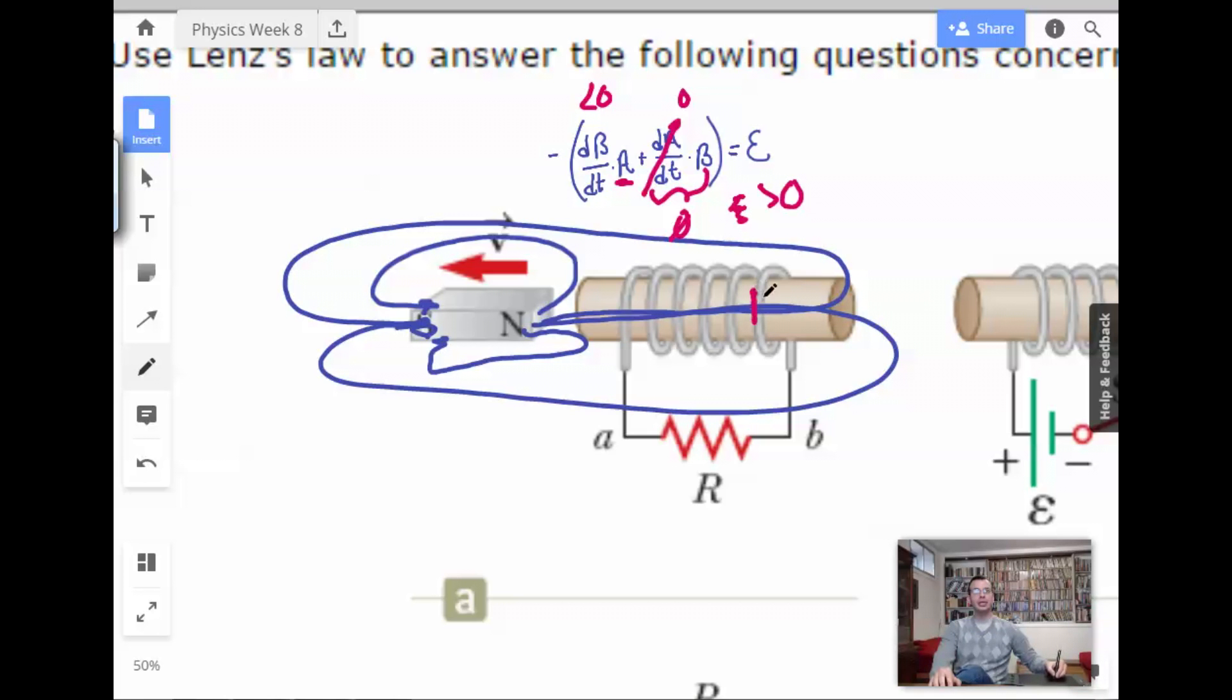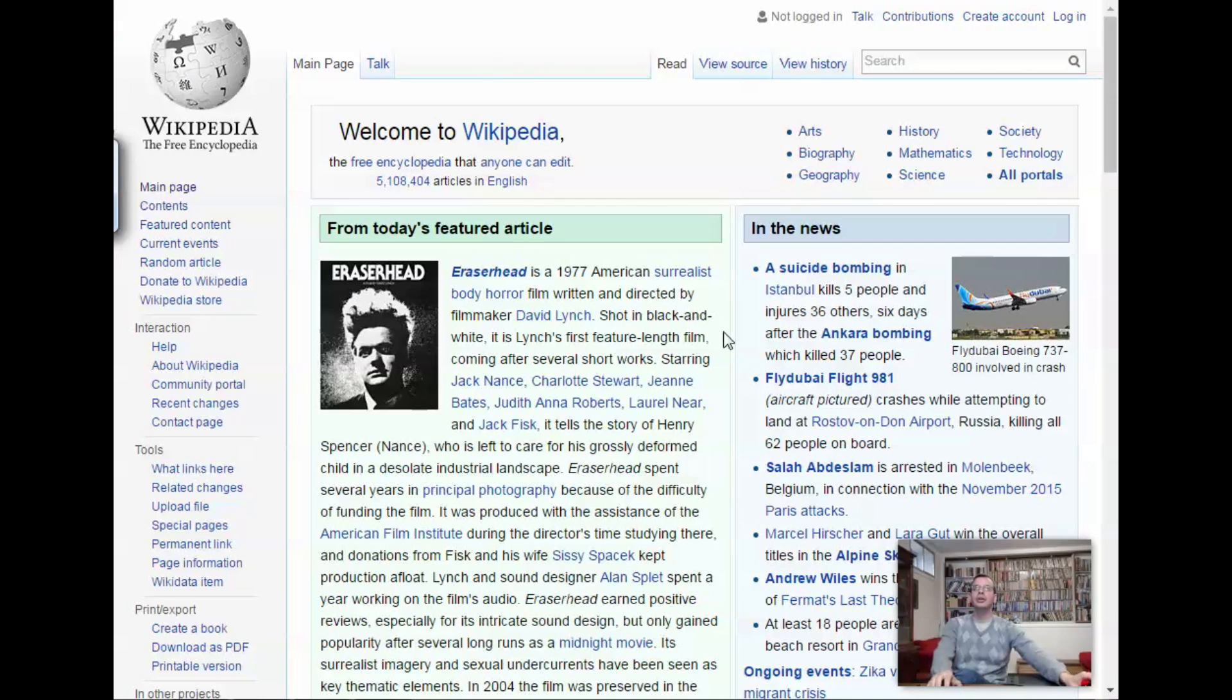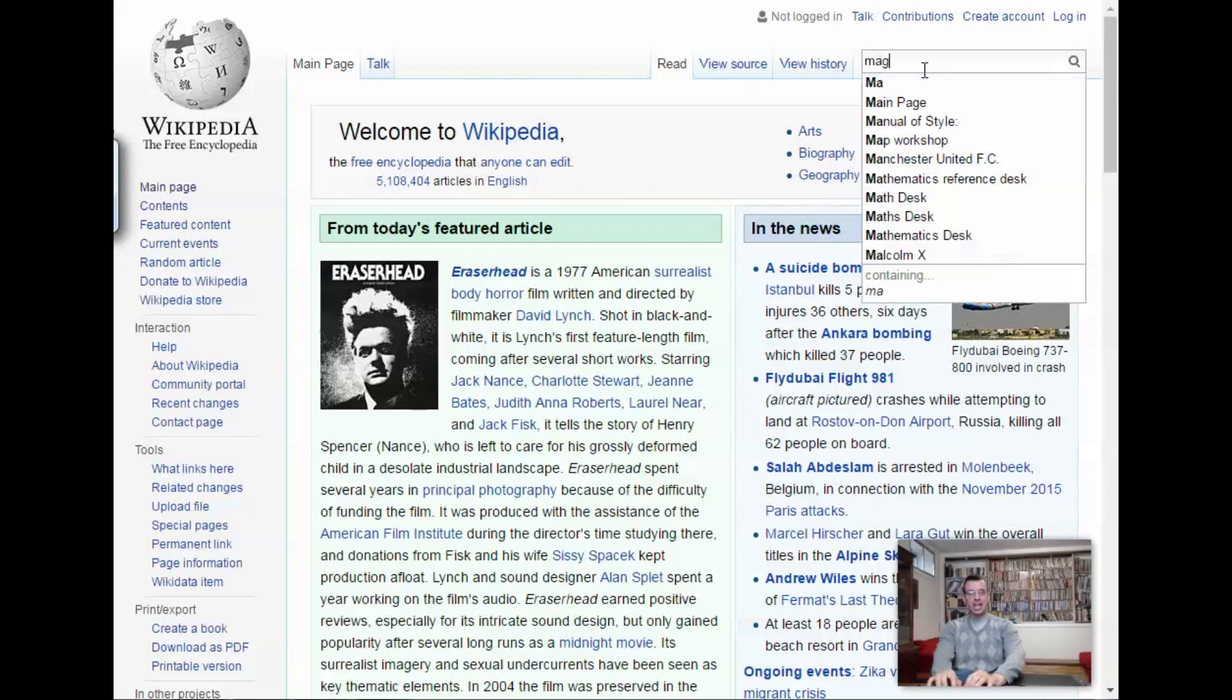All right. So what that positive number means is that the coil of wire is going to make a magnetic field in the direction of the original magnetic field. So that positive or negative just means in the same direction as the magnetic field that currently is going or against the direction of the magnetic field that's currently going. So right here, we know that magnetic field goes out to the north and into the south.